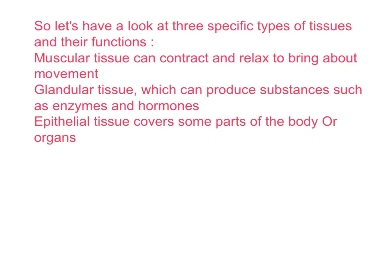Let's focus on three types of tissues and how these tissues make an organ work. First, muscular tissue is made up of cells which can contract and relax, making movement possible. Second, glandular tissue can produce substances such as enzymes and hormones — for example, the salivary gland produces saliva, a liquid containing chemicals which aids digestion. Third, epithelial tissue covers some parts of the body or organs, acting as a protective covering on most organs in the body.